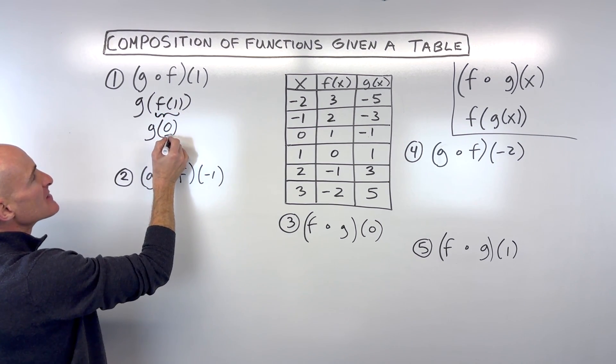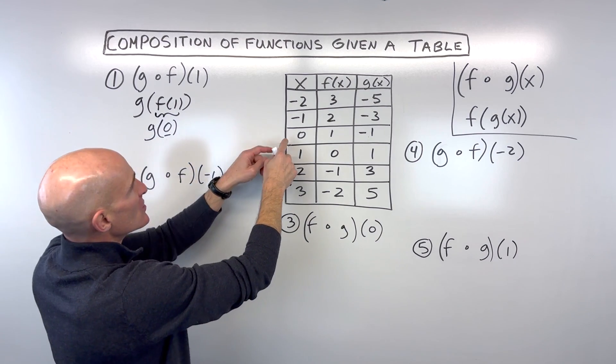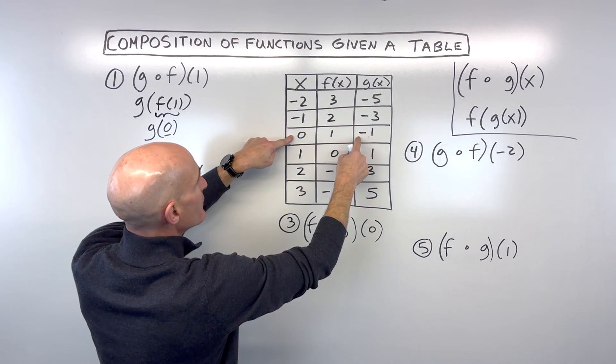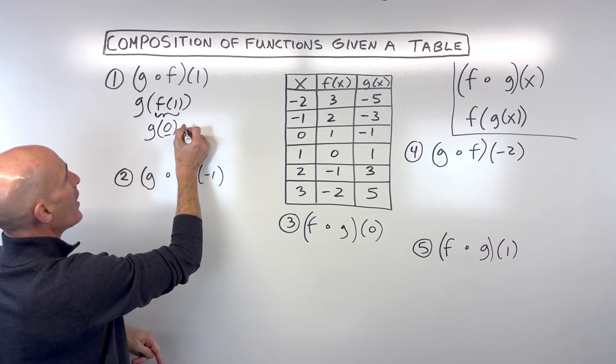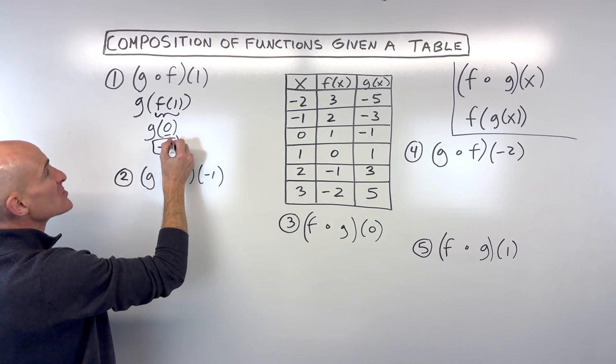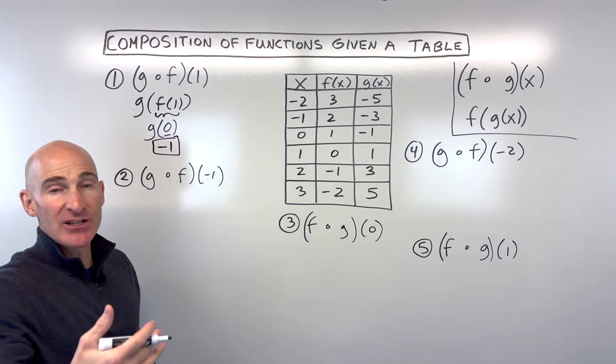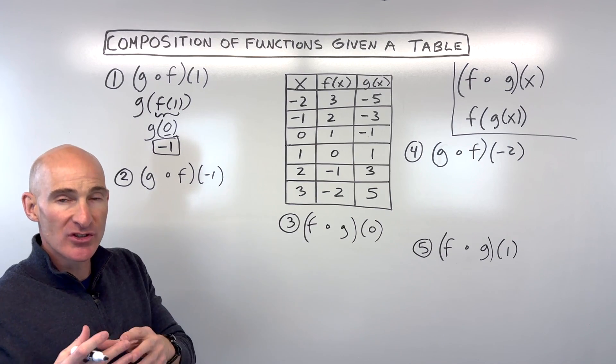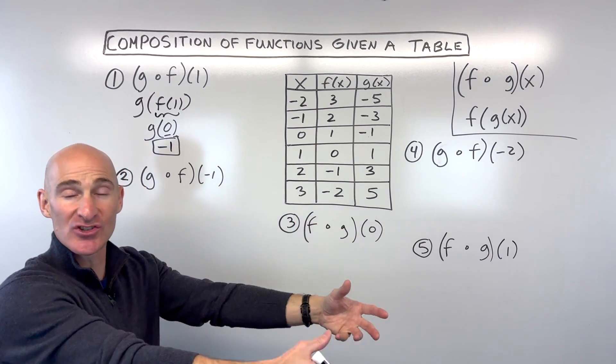Now that becomes the input in our g function. So when x is zero, we go over to our g function, and the output is negative one—we solved it. It's really like a double substitution: you're solving, then taking that answer, putting it into the next function, and solving again.